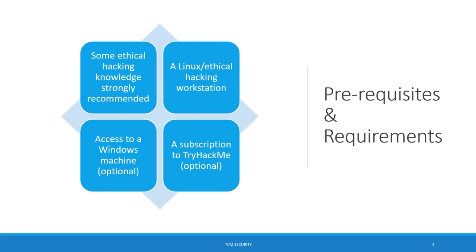You also need an ethical hacking workstation. Most of us use Linux, but if you use Windows, that's fine too. Whatever you like to utilize for your ethical hacking workstation, you're going to need that for this course. Access to a Windows machine is optional. There's one machine in this course that is going to be a buffer overflow type machine. If you're looking to take exams such as the OSCP or the PTP that have buffer overflow elements, then you should be practicing that — and I'm incorporating that into this course. That's the only time we're going to use Windows and it's at the very end.